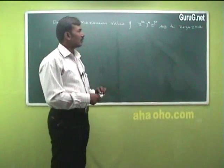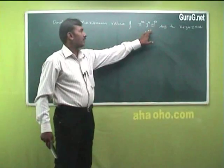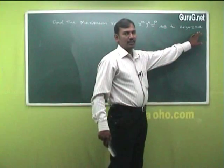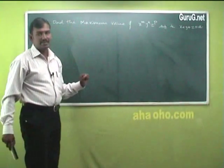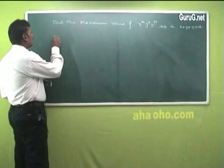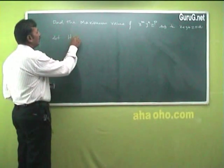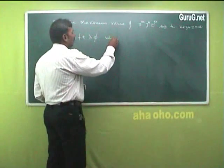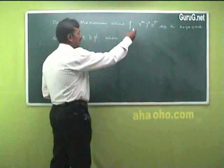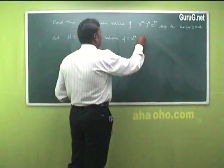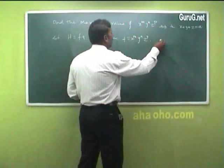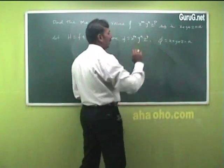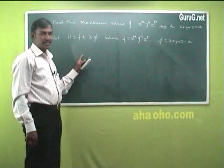The function has three variables x, y, z, and these variables are connected by the relation x + y + z = a. So this comes under constrained maxima and minima. Here, let h = f + λ·φ, where f = x^m · y^n · z^p (the function to be maximized) and φ = x + y + z − a (the given condition).